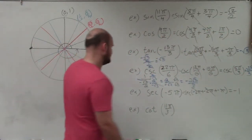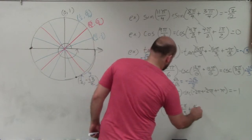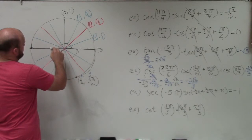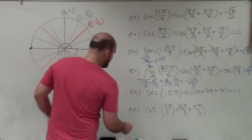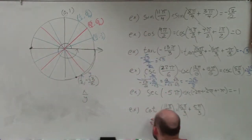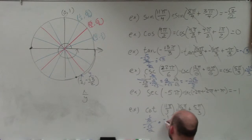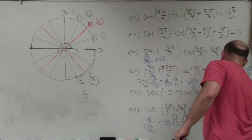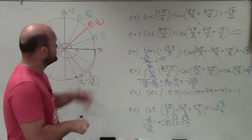For cotangent of 11π/3, one revolution in thirds is 6π/3. So 11π/3 = 6π/3 plus 5π/3. The 6π/3 is a full revolution, so we need cotangent of 5π/3. Counting: 1, 2, 3, 4, 5 thirds. Cotangent is x over y, so that's (1/2) divided by (negative √3/2). The twos divide out, leaving 1 over negative √3. Rationalizing gives negative √3 over 3. The final answer is negative square root of 3 over 3. And that is how you use period as an aid to evaluate trigonometric functions.